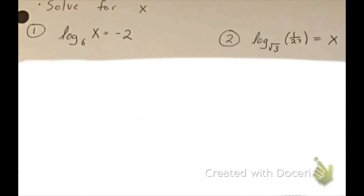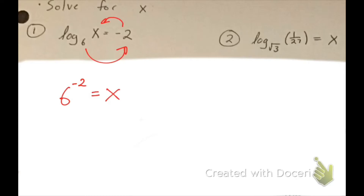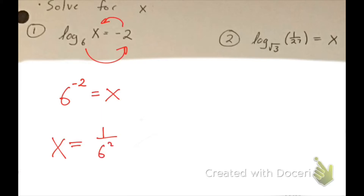Alright, our first example is solve for x — I actually want to get a number for x. Number one: log base 6 of x is equal to negative 2. I'm going to rewrite it — I get 6 to the negative 2 is equal to x. A negative exponent flips everything, so it goes to the bottom, and I get x is equal to 1 over 6 squared. 6 squared is 36, so x is equal to 1 over 36.